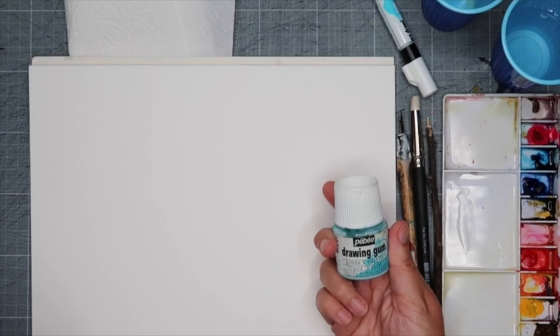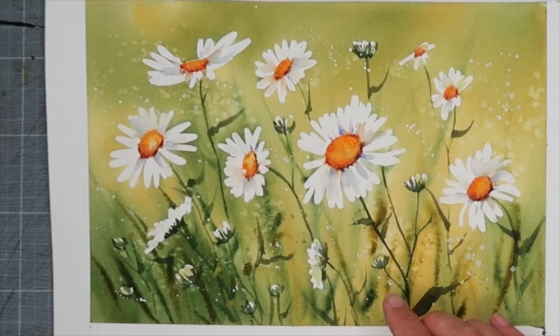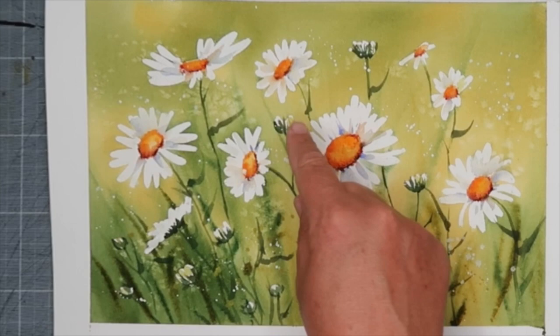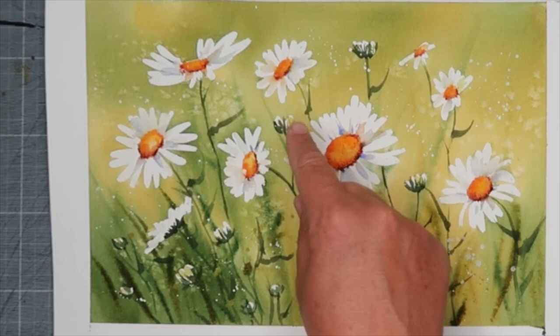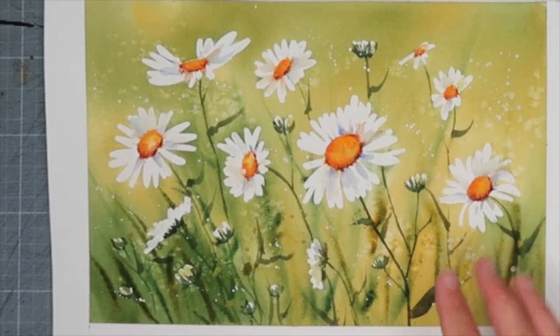What is masking fluid? It's a latex-based product that is very good at keeping small tricky areas white when you're painting on watercolor paper. As you can see here with these daisies that I painted, I use masking fluid to paint around these tricky areas so that the masking fluid prevents the paint from reaching the paper when you have it on.